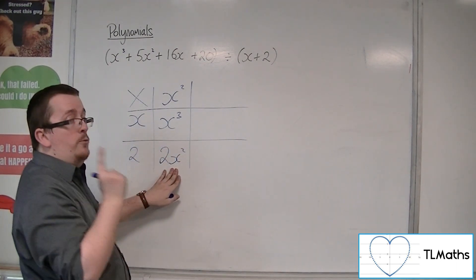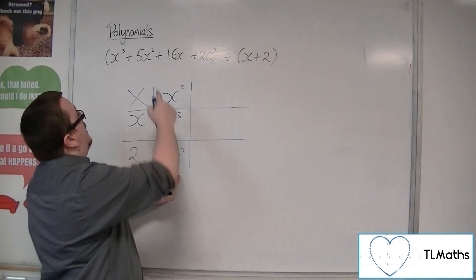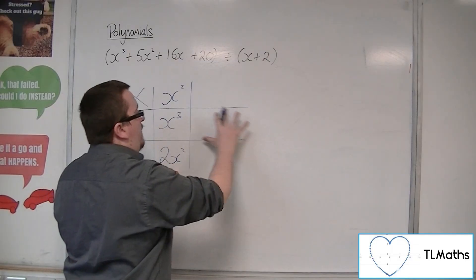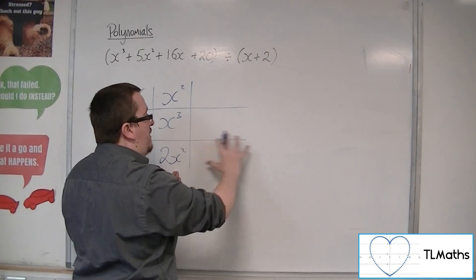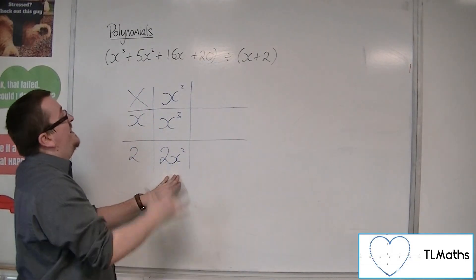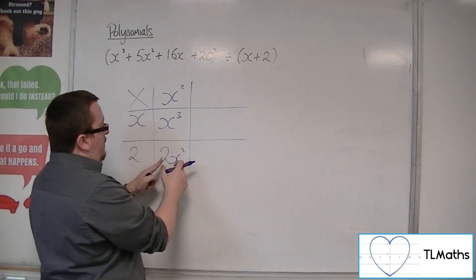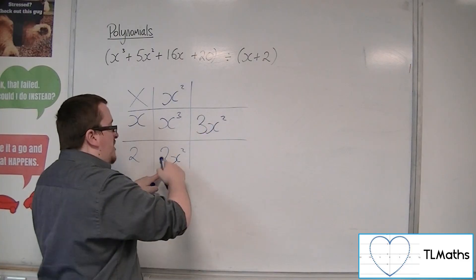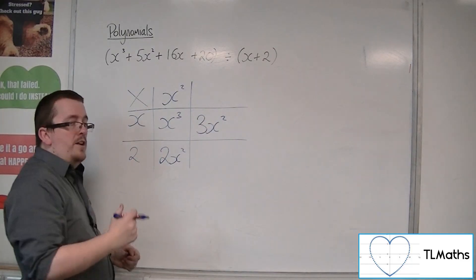However, we don't want 2x squared. We want 5x squared. So, there must be some way of collecting like terms within this section of the multiplication grid to get 5x squared. So, if I've got 2x squared, I must also have 3x squared to combine to make the 5x squared.